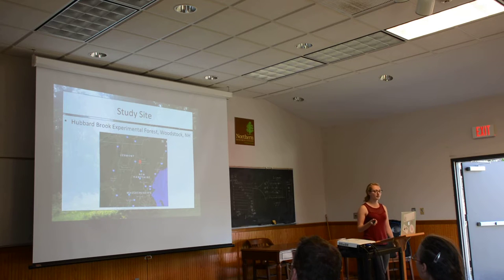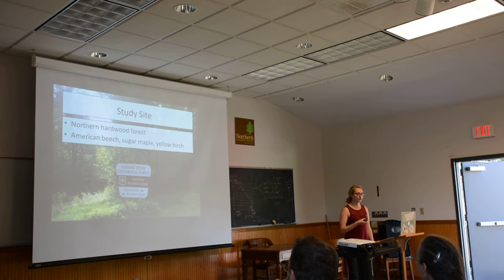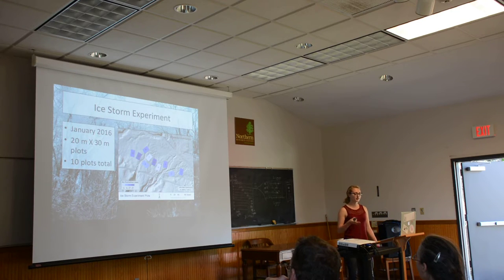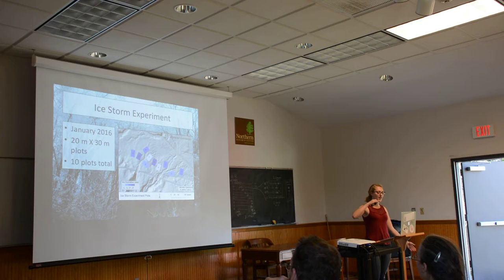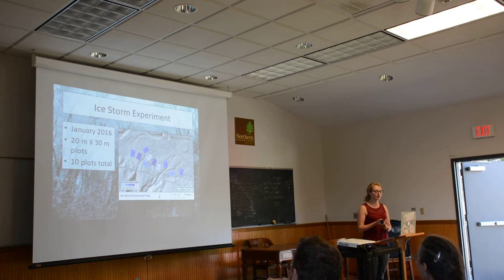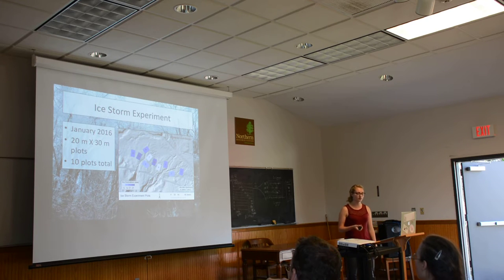I conducted this study at the Hubbard Brook Experimental Forest, which is primarily a northern hardwood forest. The dominant tree species are American beech, sugar maple, and yellow birch. The ice storm experiment occurred here in January 2016, where they ran hoses and sprayed 10 experimental ice plots, each 20 meters by 30 meters. There were two control plots with no ice, two low treatment plots with 6 millimeters of ice, four medium treatment plots with 13 millimeters of ice, and two high treatment plots with 19 millimeters of ice. Two of the medium treatment plots will be treated again this coming winter.